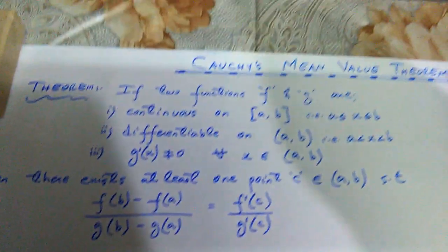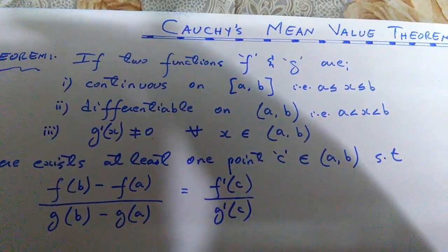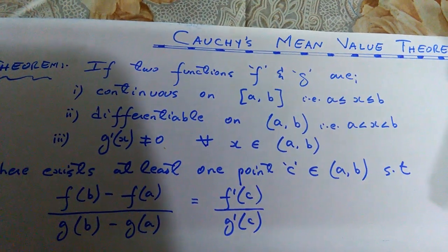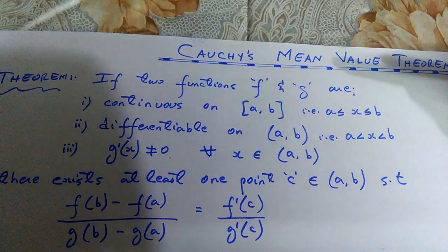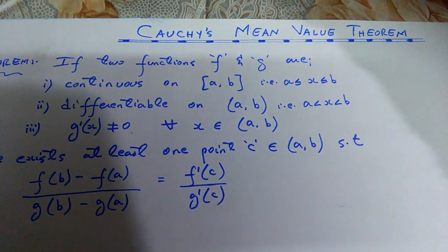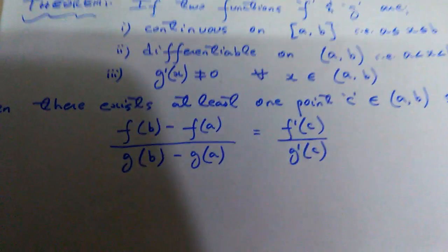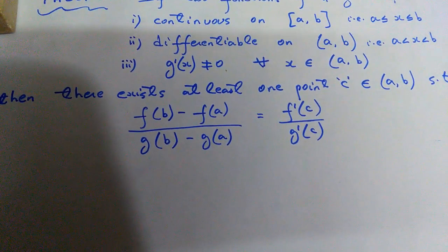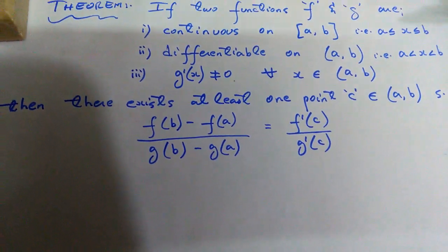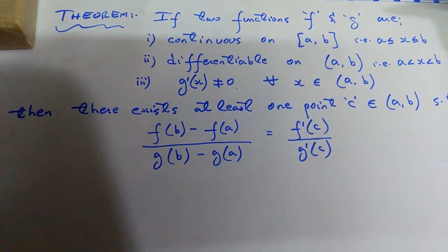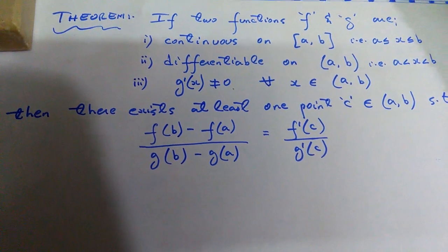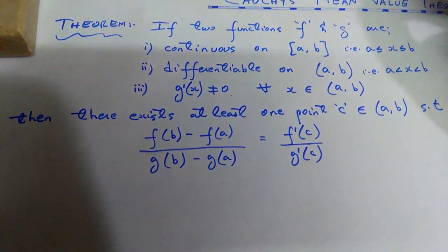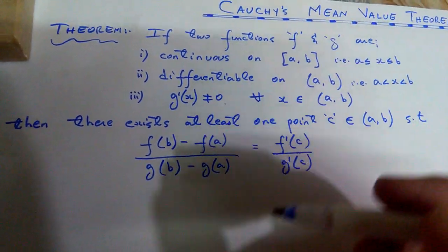Cauchy's Mean Value Theorem is the father of Lagrange's Mean Value Theorem. Lagrange's Mean Value Theorem is the special case — or I'd say it's a simple case — of Cauchy's Mean Value Theorem. I have discussed Lagrange's Mean Value Theorem in my previous video; you can see the link in the description box, along with the explanation of the tangent line and derivatives.